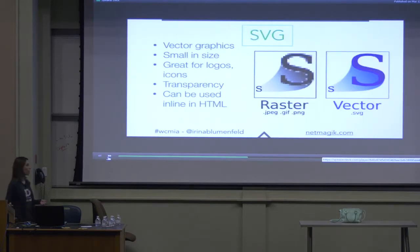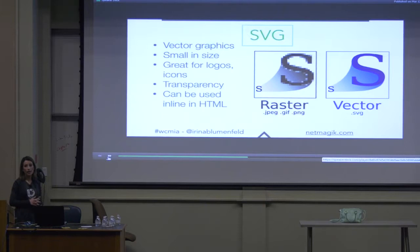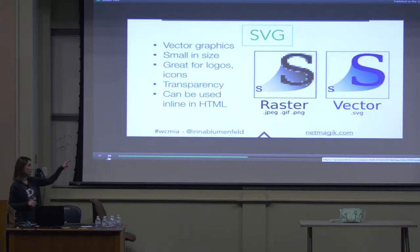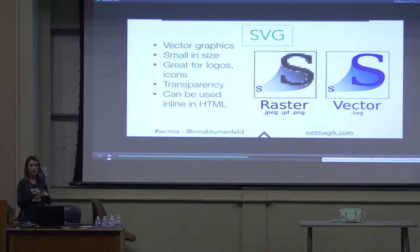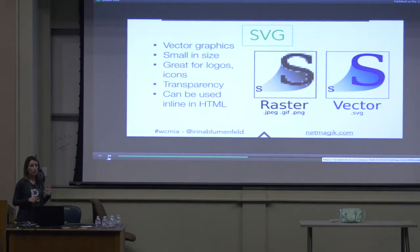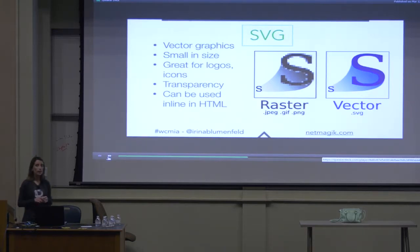SVG is scalable vector graphic. It's very small in size and it's great for logos and icons. It supports transparency. Here's the difference between raster and vector — the raster formats are JPEG, PNG, and GIF. Have you ever tried to enlarge an image and it gets blurry or pixelated because it loses quality? SVG stays just as sharp, so it's great for retina displays. It can be used inline in HTML code, or you can insert it as an image with a .svg file extension.